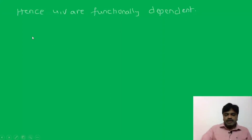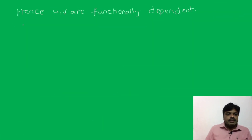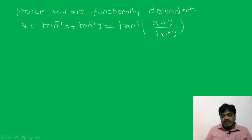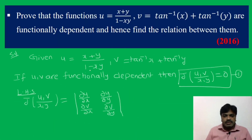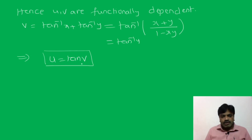Now find the relation between u and v. Take v = tan⁻¹x + tan⁻¹y, where x and y are greater than 0. By the addition formula, this can be written as v = tan⁻¹[(x + y)/(1 − xy)]. But (x + y)/(1 − xy) is nothing but u, so v = tan⁻¹(u), which gives u = tan(v). This is the relation between u and v.